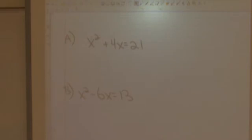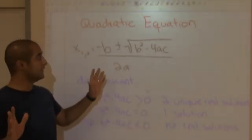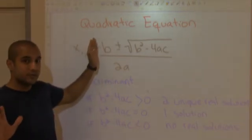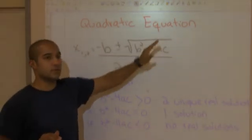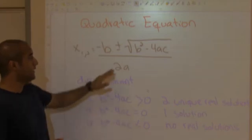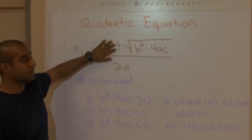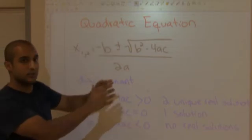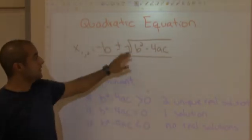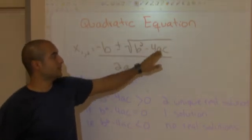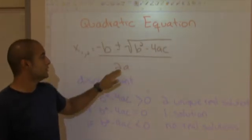Go ahead and try those practice problems — I'll show you the answers in 3, 2, 1. Here are your answers. I hope you got them right. Here's my favorite method: if nothing is working, you can always use the quadratic formula, given as negative b plus or minus the square root of b squared minus 4ac, all over 2a. Once you get to the plus or minus, you'll split it into two sides.